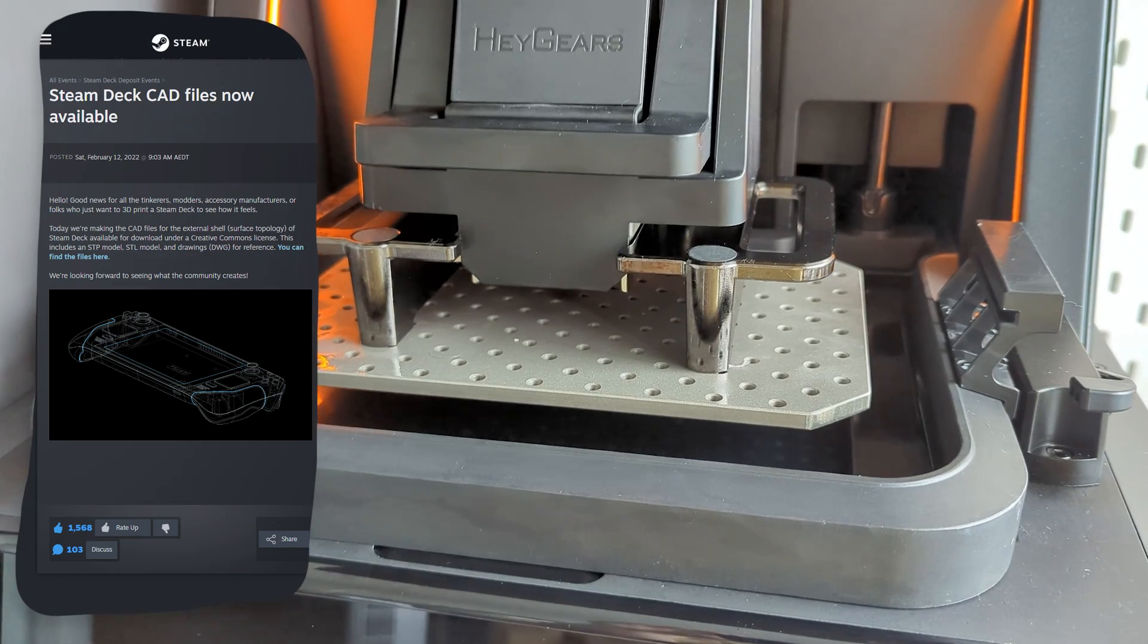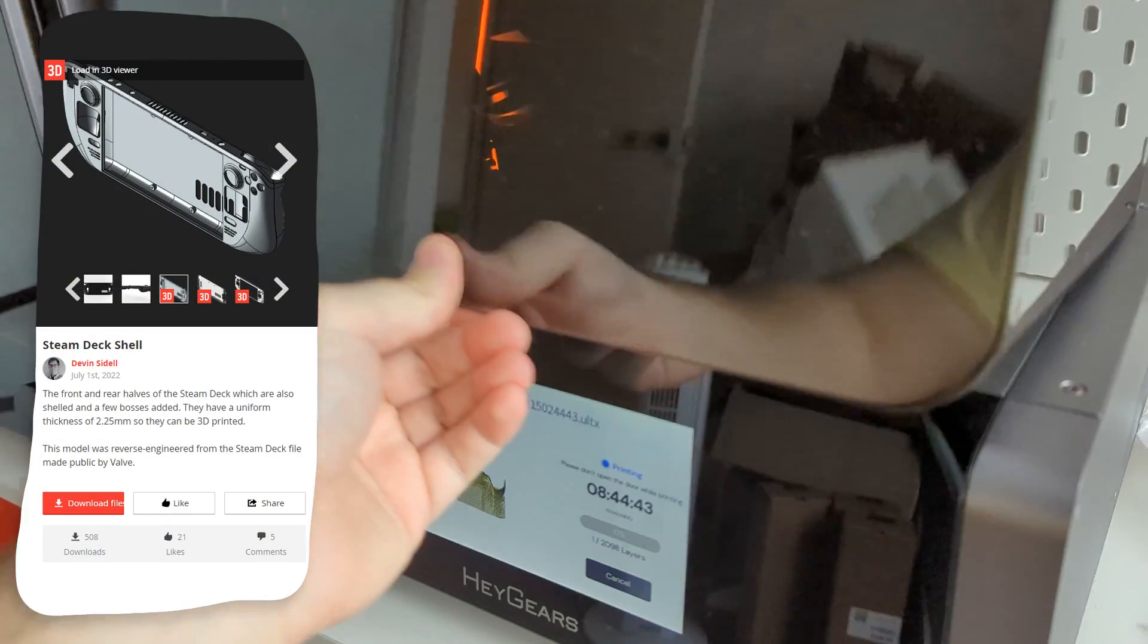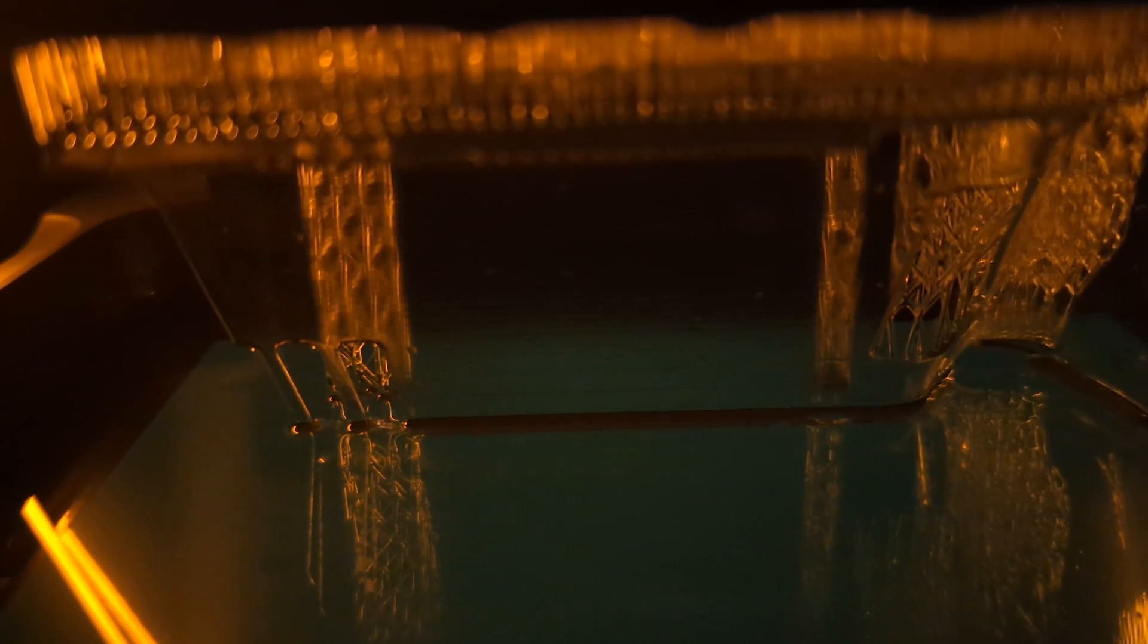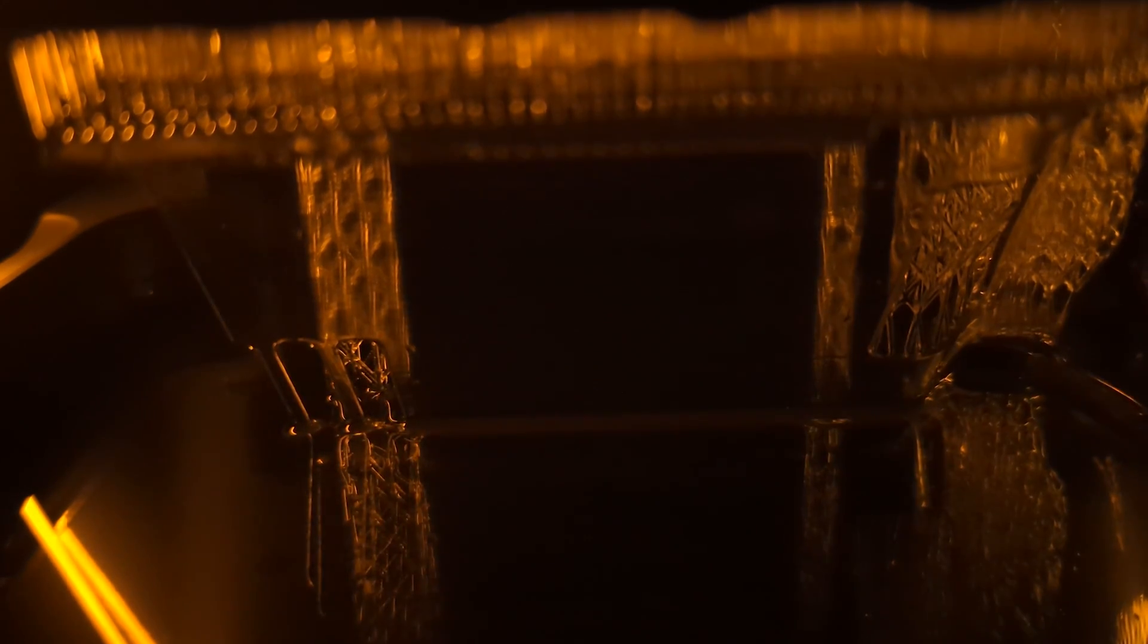Originally, Valve released the 3D files for the steam deck, then Devon modified it to be hollow, and now I've further remixed it for the steam deck OLED and made some adjustments. And please keep in mind, this is just version 0.1 of my design. The model is far from perfect. I know it probably won't fit on the first try, and that's okay. We're on a rapid prototyping journey, and hopefully we'll learn from the mistakes and improve for the next version.